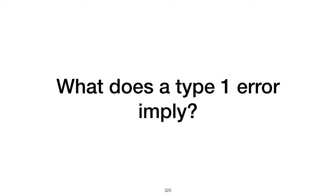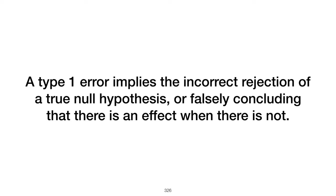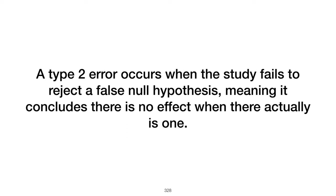What does a type 1 error imply in statistical analysis? A type 1 error occurs when the null hypothesis is incorrectly rejected in favor of the alternative hypothesis — also known as a false positive error. How to decrease the chance of a type 2 error? The chance of a type 2 error, which occurs when the null hypothesis is incorrectly accepted, can be decreased by increasing the sample size, which improves the study's power and makes it more likely to detect a true effect.